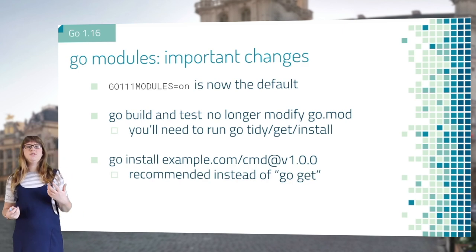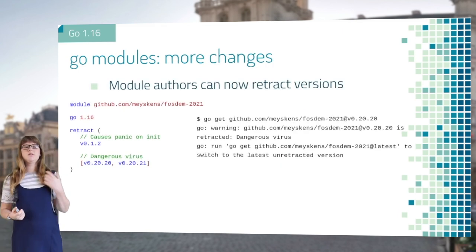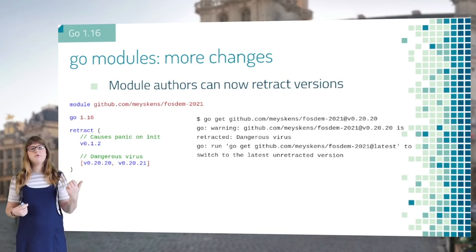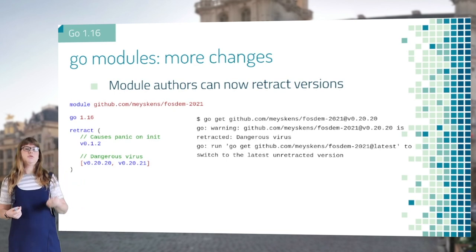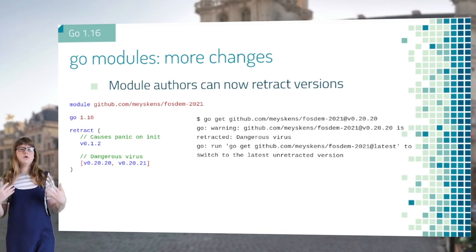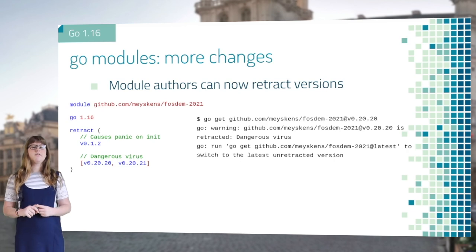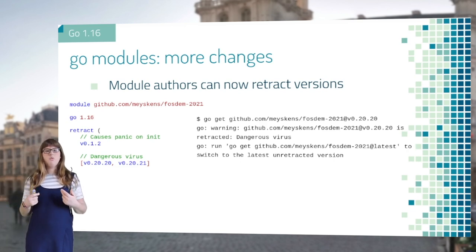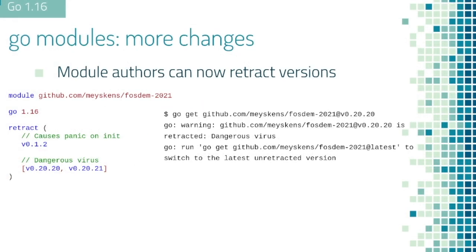There are even more changes to modules. In Go 1.16, Go module authors can now retract versions by using the retract verb in the Go modules file. In this example, I retract version 0.20.20 for having a dangerous virus. If a user now wants to get this module, they will get a warning that this version is retracted because of a virus and they should probably update to the latest version.